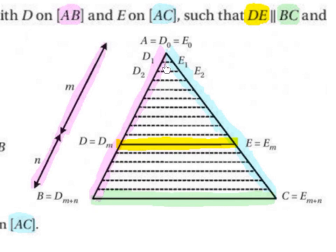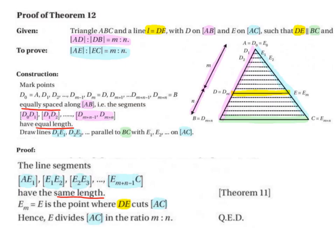It's very important to note that we have equal distance between each of these new points. We've marked the points D0 is equal to A, D1, D2, and so on down as far as DM minus 1, DM is equal to D, DM plus 1 and so on down as far as DM plus N minus 1 and ending with DM plus N which we're calling B. It's very important to note again that they are equally spaced along AB, so the segments D0 D1, D1 D2, down to DM plus N minus 1, DM plus N, they all have equal length.